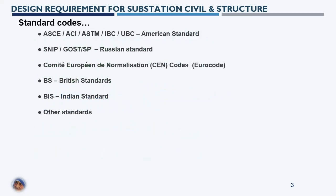The next requirement covers standard codes. Most technical specifications provided by the customer or project owner will state which standards should be used for design. For example, American standards use FIPS units — feet, inch, pound, second. Russian standards require design documents to be prepared in Russian, and their standards are also in Russian, requiring translation. European standards generally have dual-language versions — in local language such as Dutch, Norwegian, or German — alongside English.